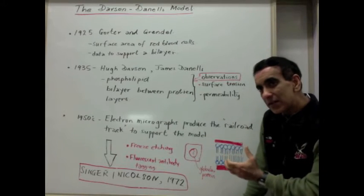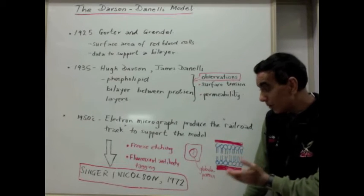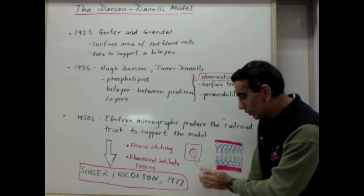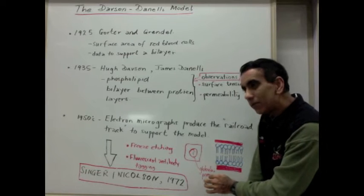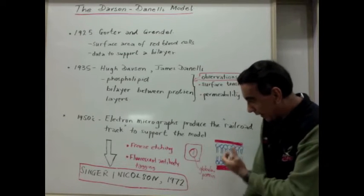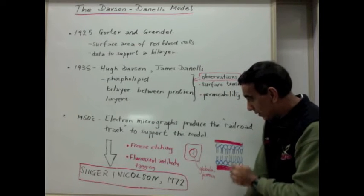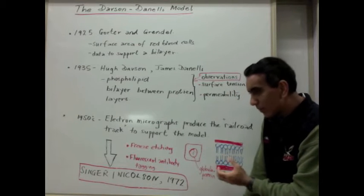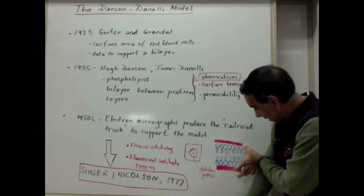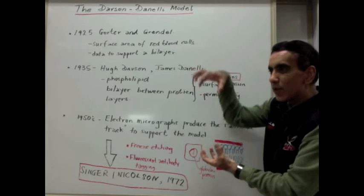And then with advances in microscopic techniques and the quality of electron microscope images, Singer and Nicolson were able to propose the fluid mosaic model. Using evidence from freeze etching and advanced techniques like fluorescent antibody tagging, today we realize that the cell membrane is not a sandwich model, but it is made up of transmembrane protein.